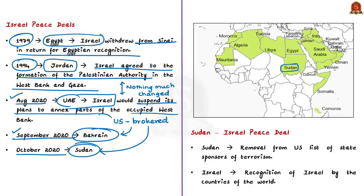Arab countries had earlier convened in the capital of Sudan and declared the famous three no's. Sudan has technically been in a state of war with Israel since the Arab-Israeli war of 1948. Therefore, normalizing ties is of great significance and importance in the geopolitics of the Arab world.